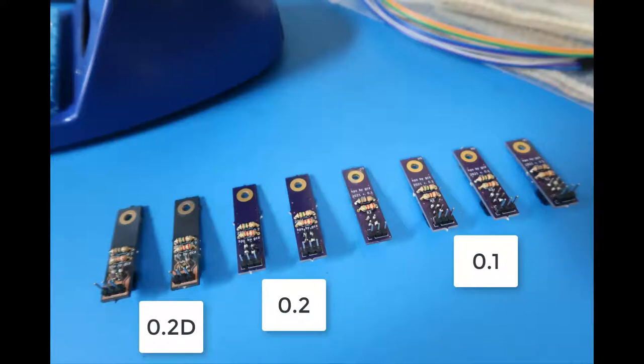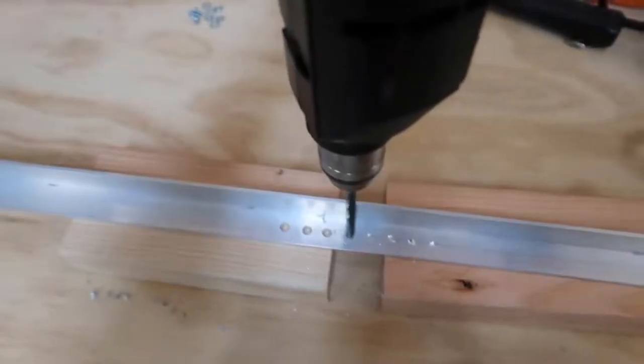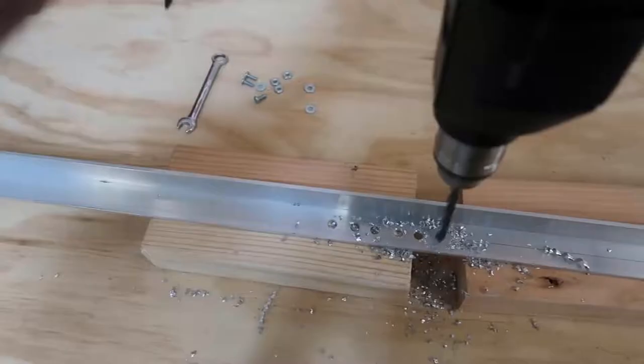The 0.2 revision boards are slightly longer to get better alignment over the hammers. I originally selected R1 equals 180 ohms, but 150 gives a little better dynamic range. Drilling to mount all eight hammer position sensor boards.